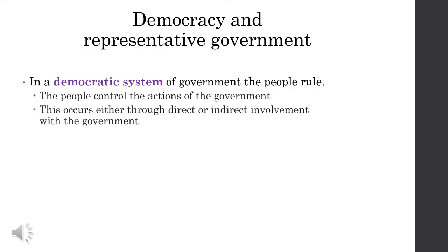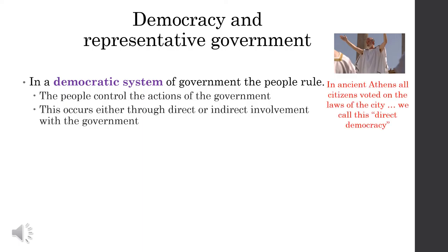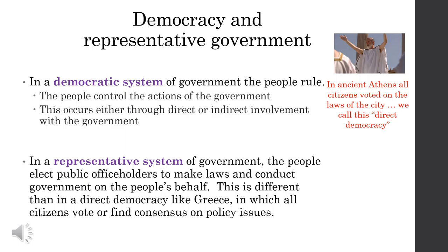You either live in a direct democracy or an indirect democracy. To understand those ideas, we need to look at Ancient Greece — specifically, the city-state of Athens. In ancient Athens, all citizens voted on the laws of the city. We call this direct democracy. If you were a citizen in Athens, you voted on the laws. There are over 370 million people living in the United States of America, so direct democracy is not going to work here. Instead, we use something called representative democracy. In a representative system of government, the people elect public office holders to make laws and conduct government on the people's behalf — unlike in a direct democracy like Greece, in which all citizens vote or find consensus on policy issues.